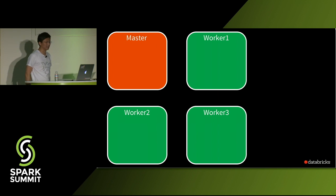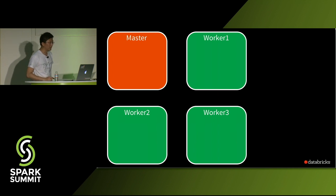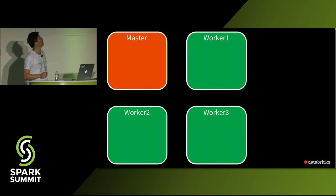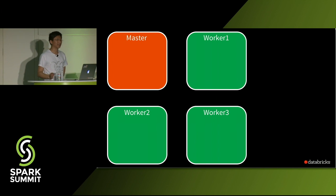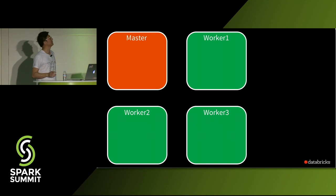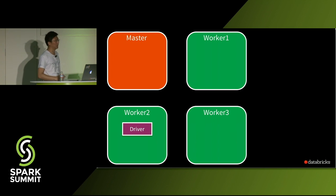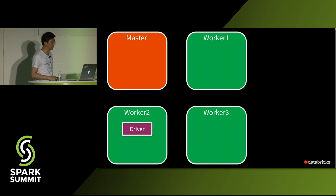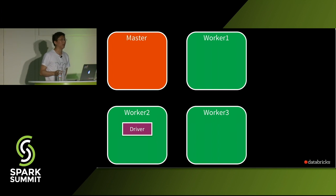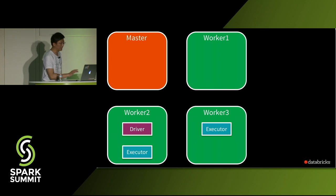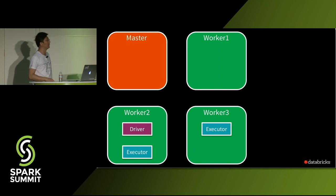Spark is a distributed engine, so let's see the memory usage at the cluster level. A typical Spark cluster will contain a master and several workers. If you use YARN or Mesos, there should be something similar but with different names. When users submit a Spark application, we will launch a Java process on some node, and the Java process will allocate resources for the master, which will then launch some executors for this job.